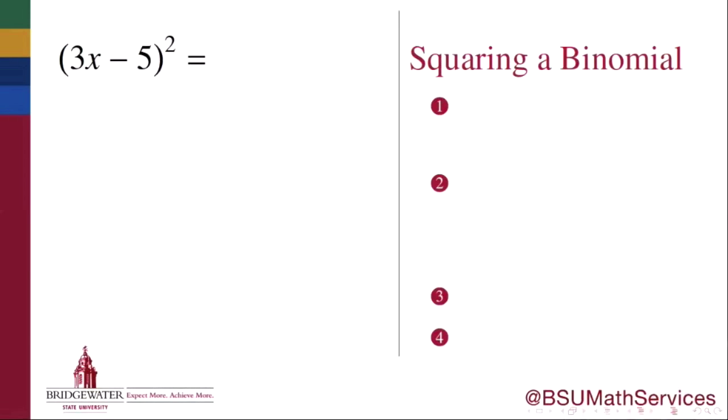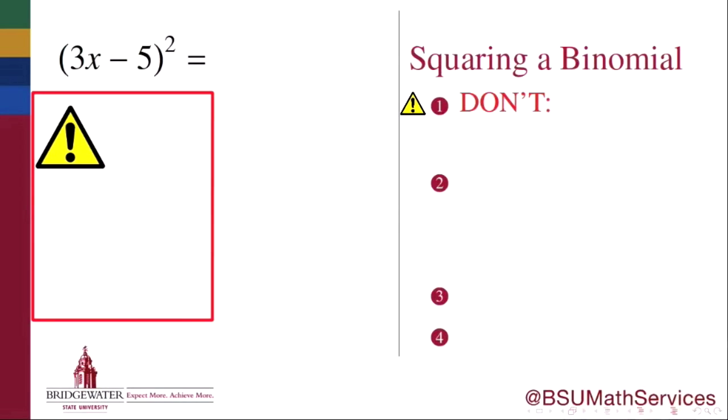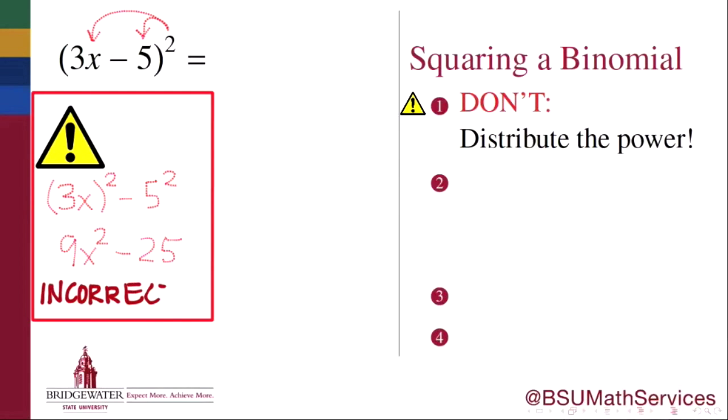What not to do when squaring a binomial is to treat it like a distributive property problem. In other words, the first instinct that many students have that gets them into trouble is that they would like to distribute the power 2 across the subtraction inside the parentheses and in doing so typically obtain an answer something like 9x to the second minus 25. This is an incorrect solution.